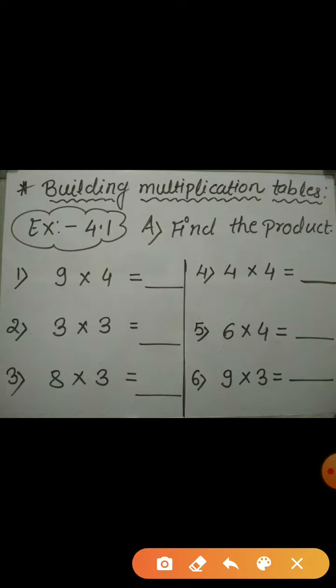Sixth example: find the product of 9 and 3. 9 ones are 9, 9 twos are 18, 9 threes are 27. Hence, the product is 27.